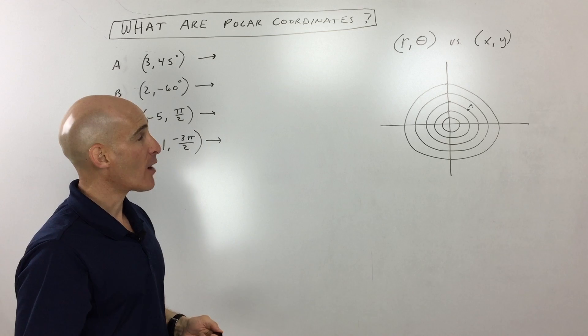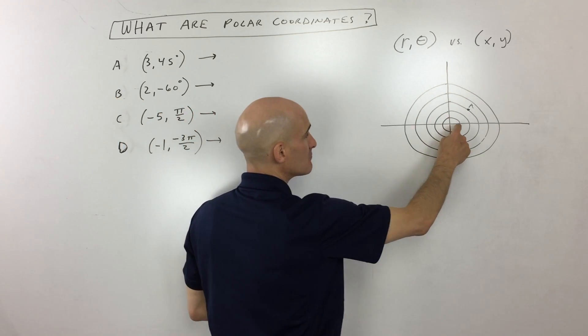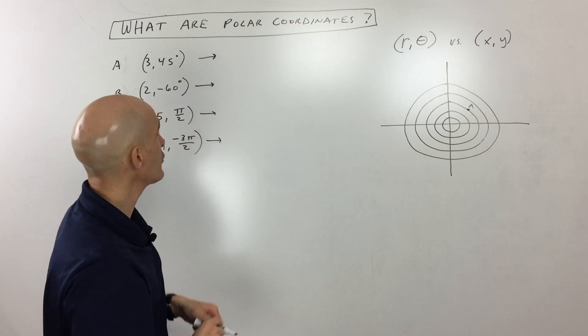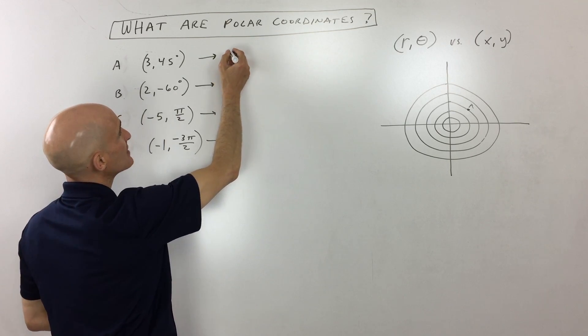Now, you might be saying to yourself, Mario, isn't there another way that I can locate this point? Couldn't I go this direction since it's circular? And you're absolutely right. And another way of locating this point, there's many ways of doing this, an infinite number of ways, matter of fact.